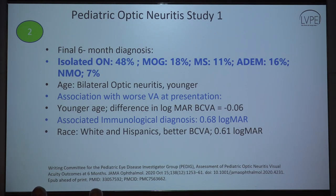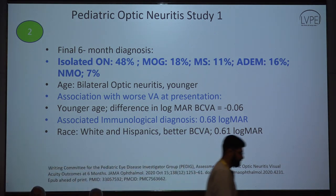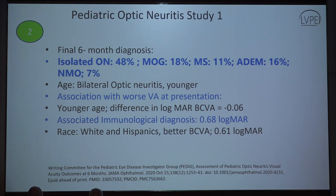Similar literature in the pediatric age group showed that the final diagnosis was one of the neuroinflammatory syndromes in nearly 1 out of 2 patients — 50% of patients. The most common was MOG, followed by ADEM, and then multiple sclerosis. Notably, NMO is slightly more prevalent than the reported incidence in adults.